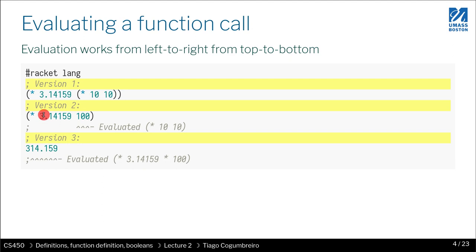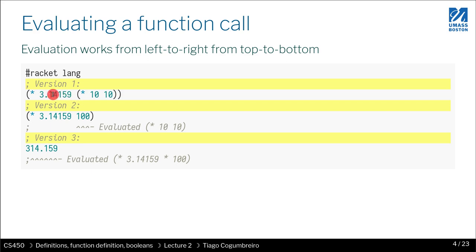This was the last exercise we saw, where we had a function call. As we know, parentheses in Racket mean calling a function. The first element is the function we're calling, and then the arguments are separated by spaces or whitespace, which includes newline characters. In this case the first argument is a literal number, and then there's another function call — parentheses again — where the function being called is multiplication, and we're passing two parameters to it.